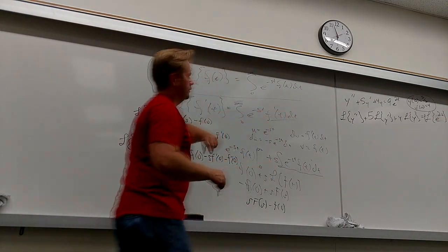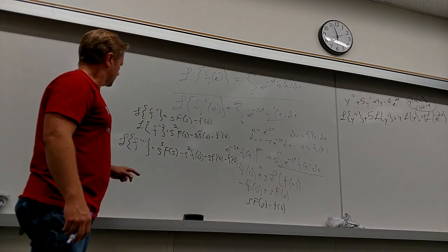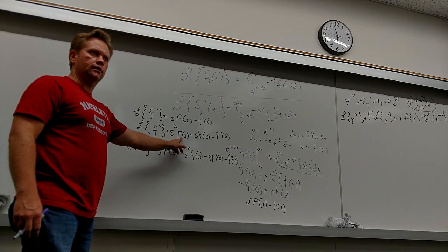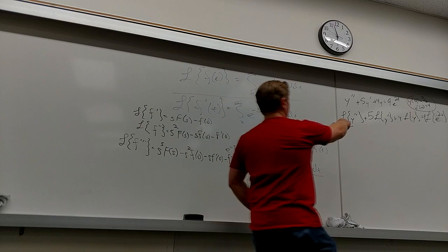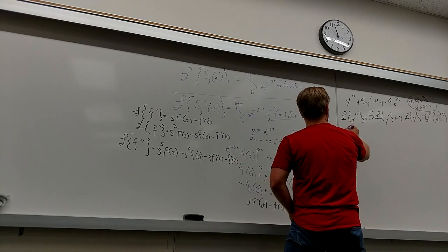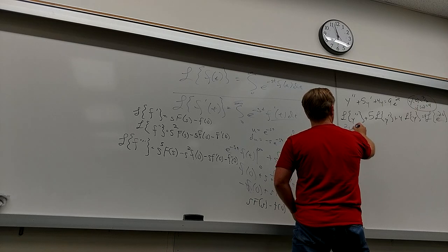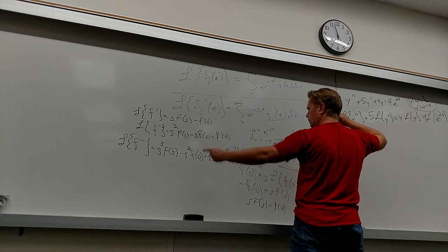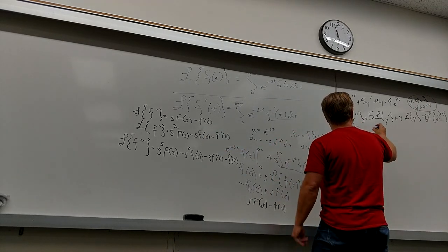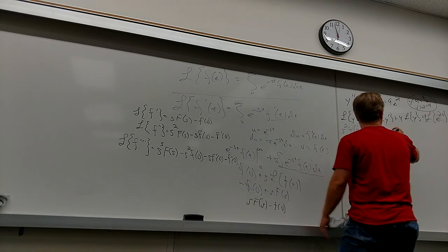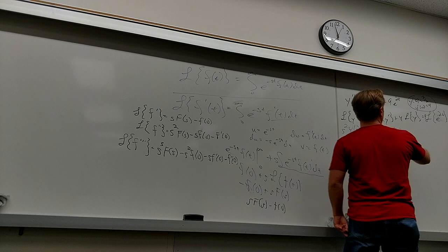So what's the Laplacian of the second derivative there? So I'm going to use this guy, not big S up, big S, Y. So here I'm going to put S squared, big Y, S. And then you get a minus S, Y at zero, minus Y prime at zero.